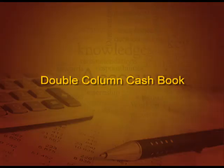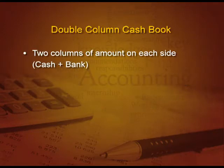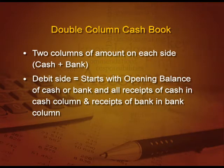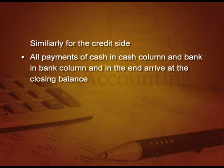Coming to the next — double column cash book — there are two columns as the name suggests: one of cash and one of bank. The debit side starts with opening balance of both cash as well as bank. Then all the receipts of cash go in the cash column and the receipts relating to bank go in the bank column. Similar treatment for the credit side — if we are paying anything in cash, it will be recorded on the credit side cash column, and if the payment is being made by cheque, it will be recorded in the bank account credit side. When all receipts and payments are recorded, we arrive at the closing balance of cash as well as bank.